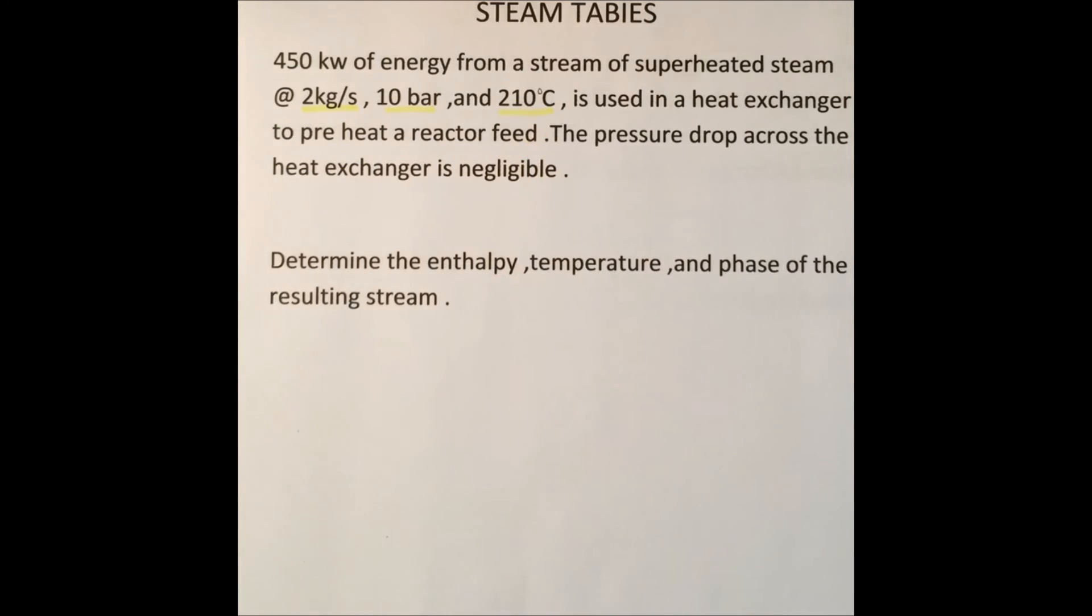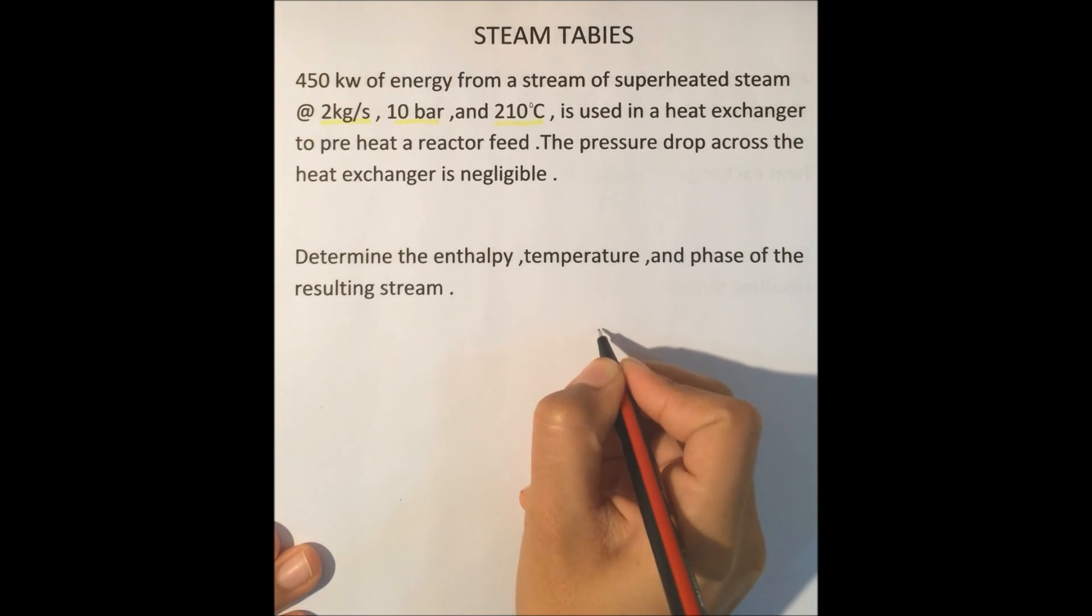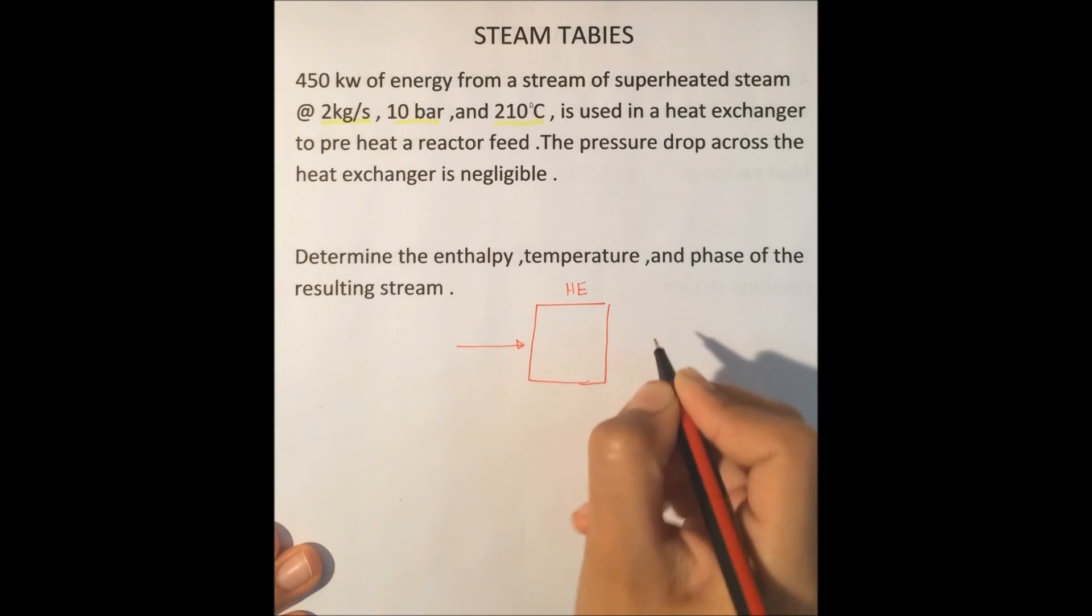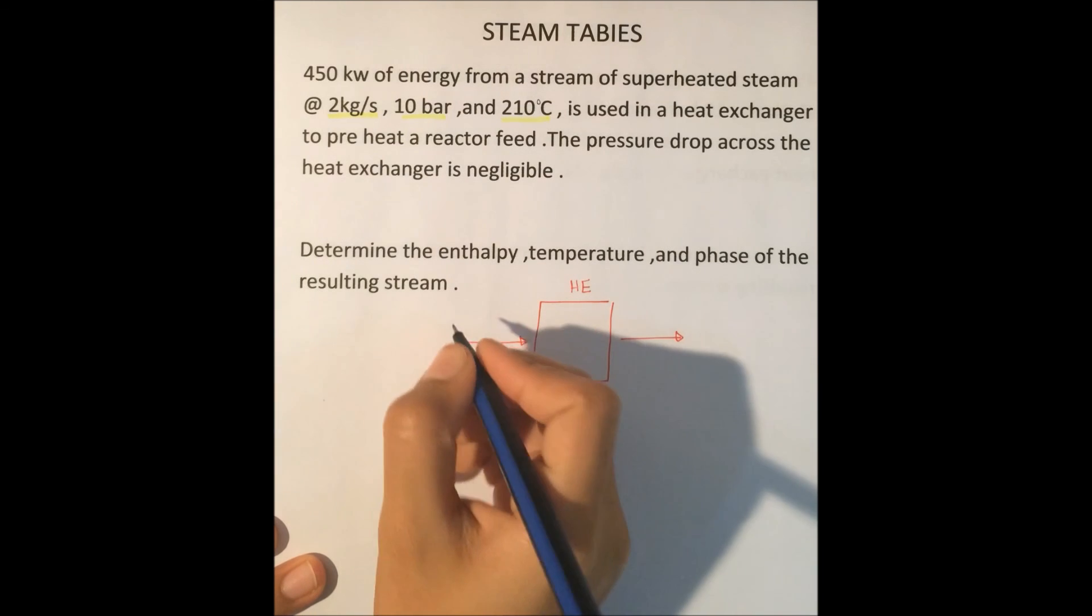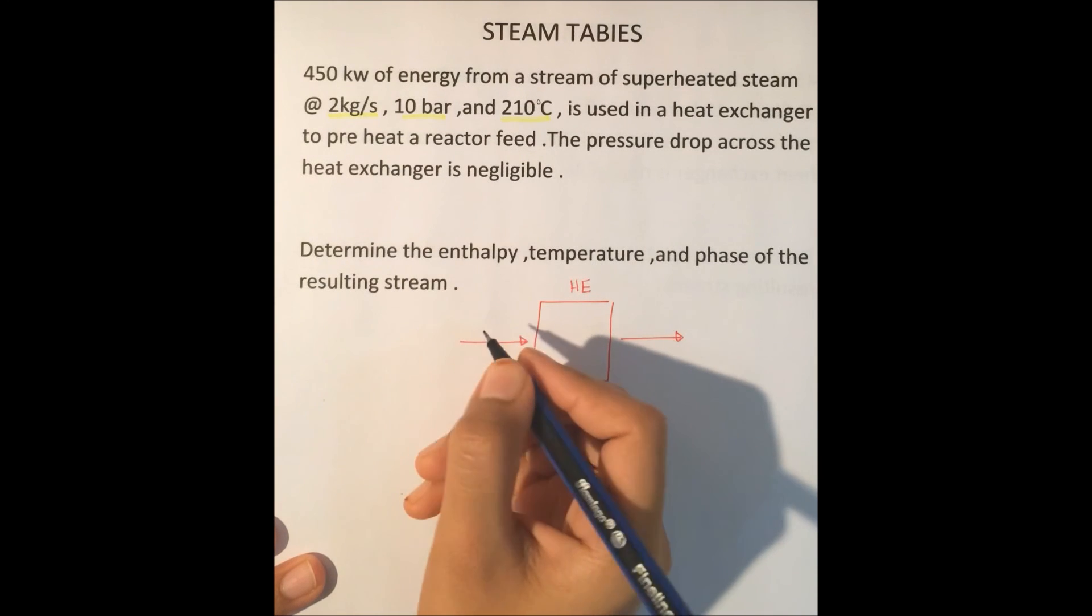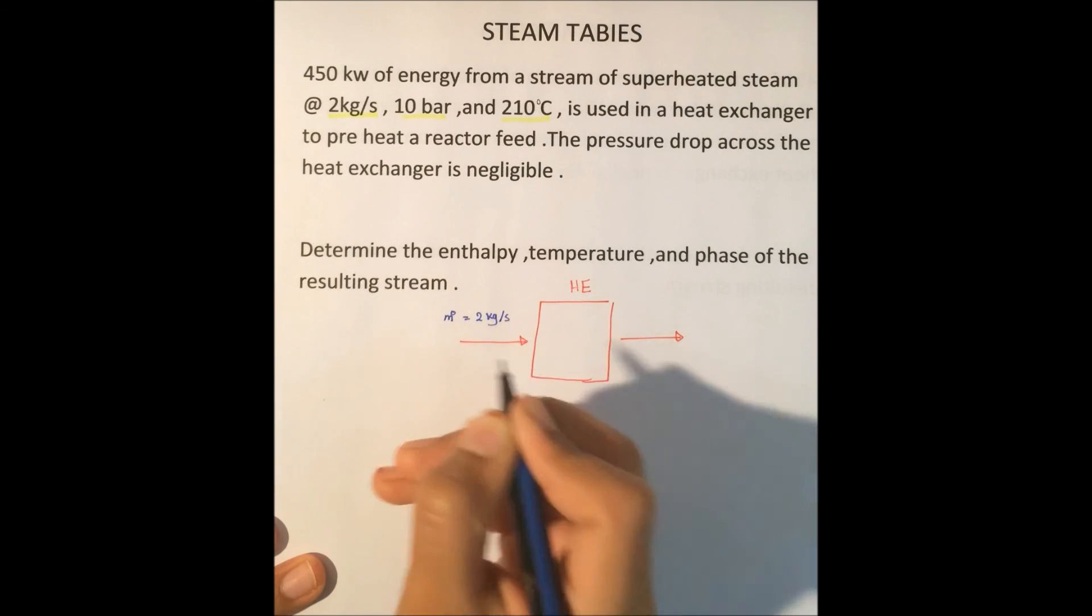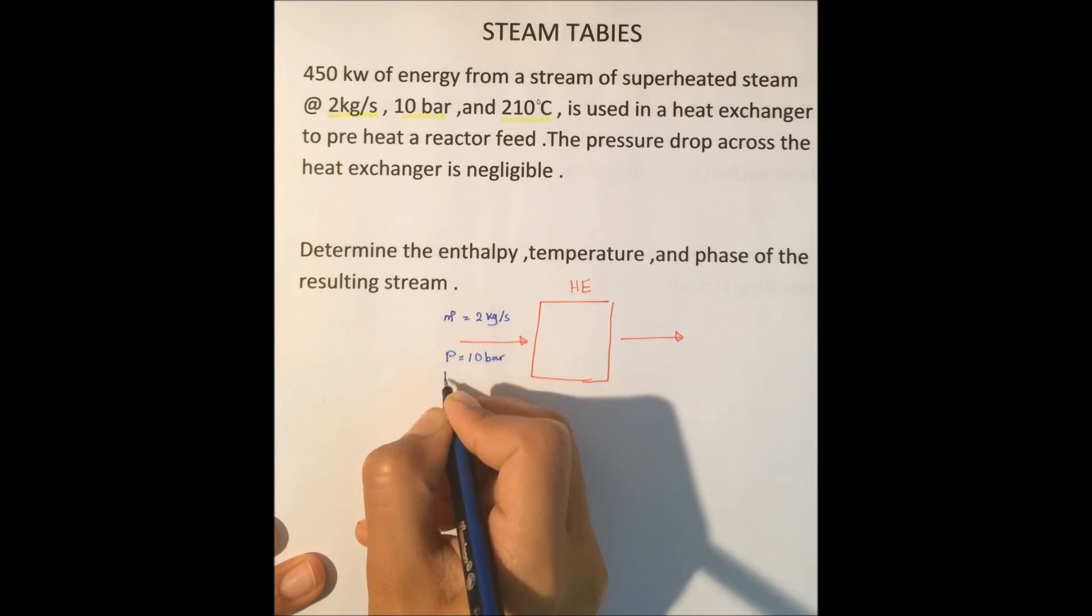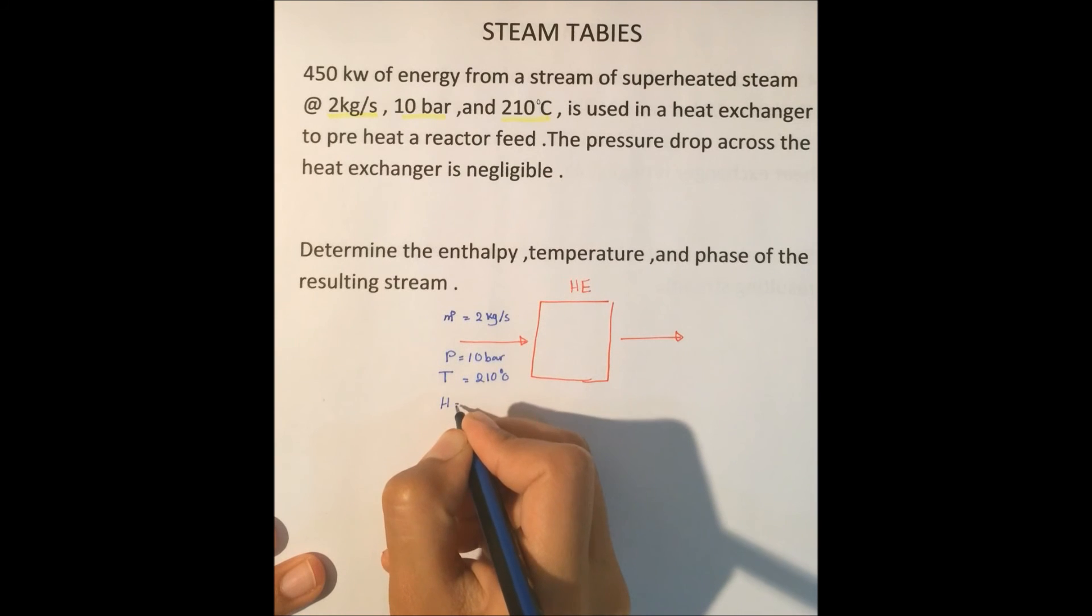The first thing we should do is draw the diagram. Here is a heat exchanger. Here is the steam stream coming in with mass flow rate equal to 2 kilograms per second, pressure equal to 10 bar, temperature equal to 210 degrees Celsius. Of course, enthalpy is unknown.